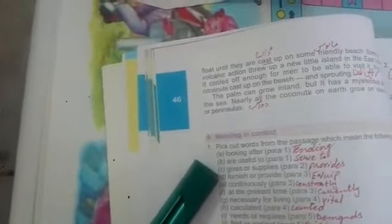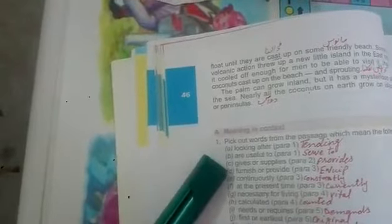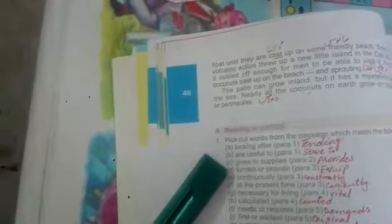First word is looking after. Answer is tending. Second word is are useful to. Answer is serve to. Number C: gives or supplies. Answer is provides, furnish or provide, equip.